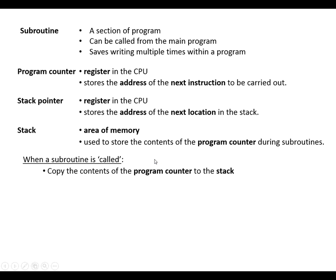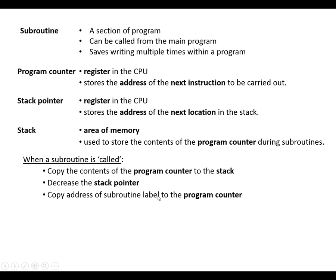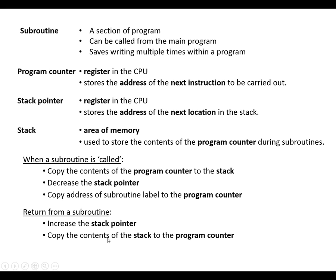When the subroutine is called, what we've got to do is copy the contents of the program counter to the stack, so it goes into the area of memory. The stack pointer usually starts at the highest location, so we're going to decrease the stack pointer to point to the next free location below that. Then we copy the address of the subroutine label to the program counter. Coming back from the subroutine, we increase the stack pointer to get back to the stored program counter value, and copy the contents of the stack back to the program counter. This could best be illustrated by doing an example.